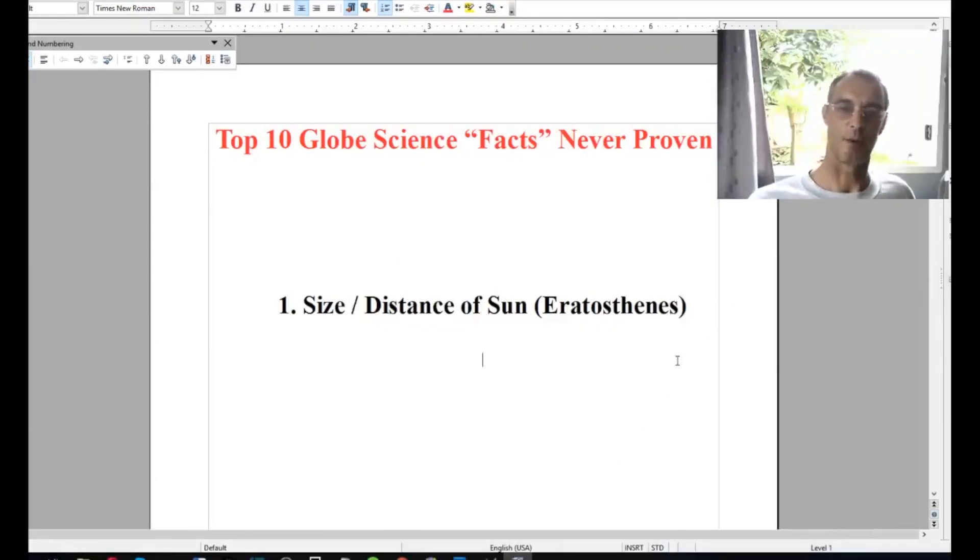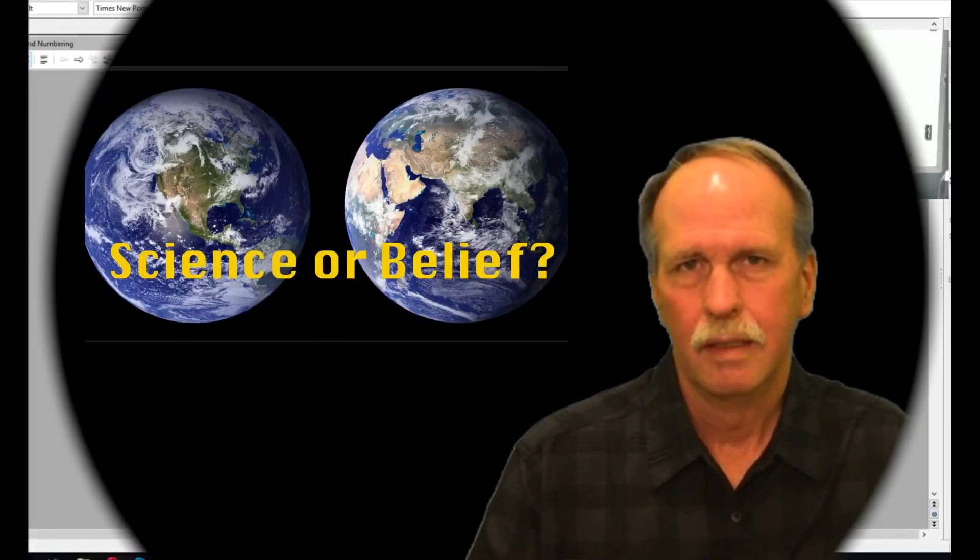So what we'll do here is just have a look at top 10 globe science facts that have actually never really been proven scientifically. They're not science facts. What you'll find is we have a few experiments, lots of observations that have been interpreted into the notion that we are going around a sun. The heliocentric model, as it's often called.